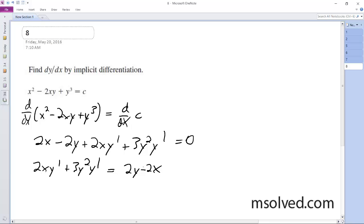Next, what we're going to do is factor out the y prime, so y prime times 2x plus 3y squared is equal to 2y minus 2x.